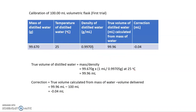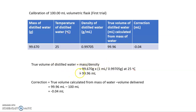Once you weigh the mass of the distilled water, you need to calculate the true volume of the distilled water from the mass of water using this formula. The true volume of distilled water is equal to mass divided by density.